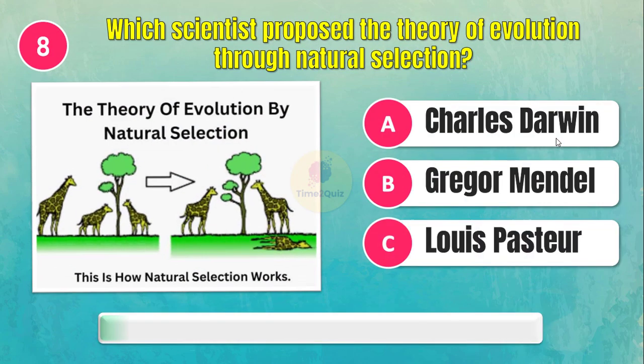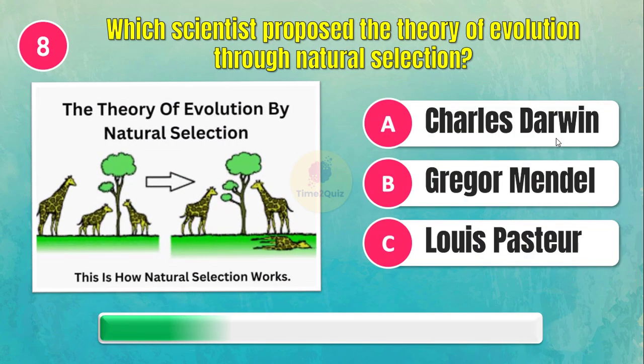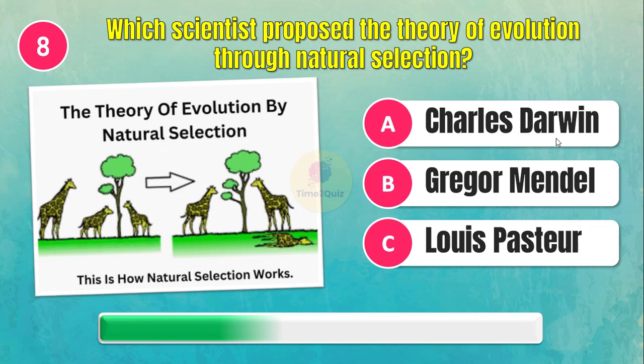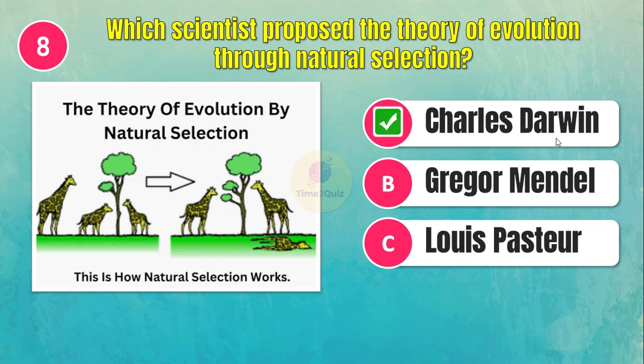Which scientist proposed the theory of evolution through natural selection? Charles Darwin.